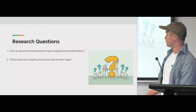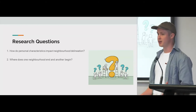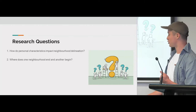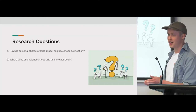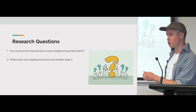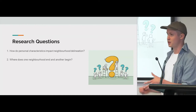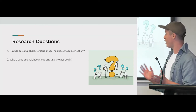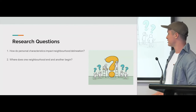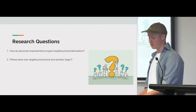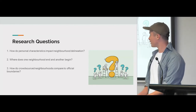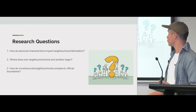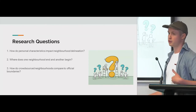I'm also interested in where does one neighbourhood end and where does another begin. When you're driving along the street, where does this neighbourhood start? Is it where the sign says welcome to Brooklyn or welcome to Wellington, or is it another arbitrary point? The answer is probably neither, but I hope I can find that out. I'm also interested in how crowdsourced or community neighbourhoods compare to the official boundaries — the fire emergency locality dataset, which is the official dataset for neighbourhoods in New Zealand.